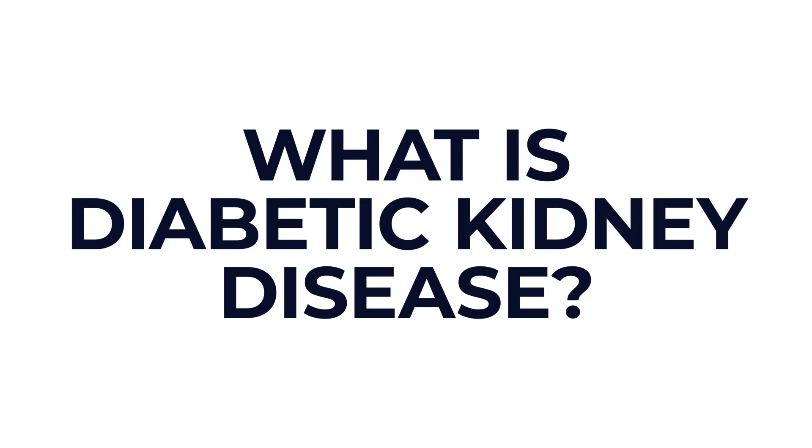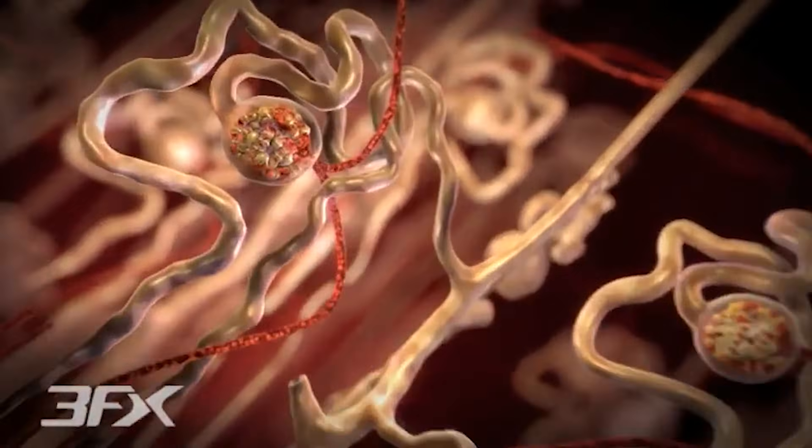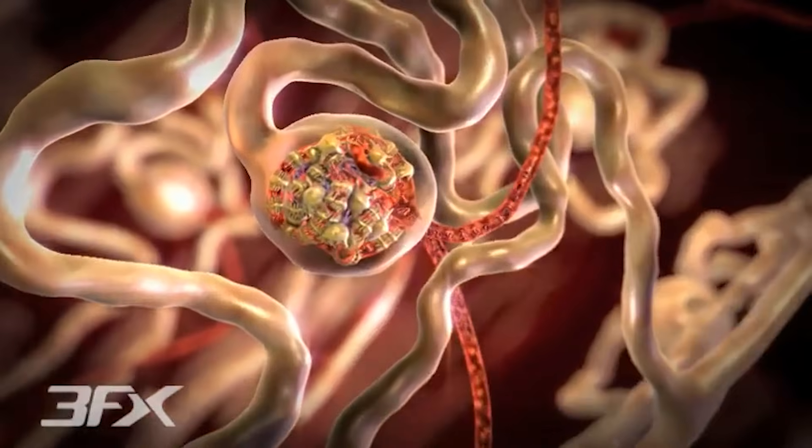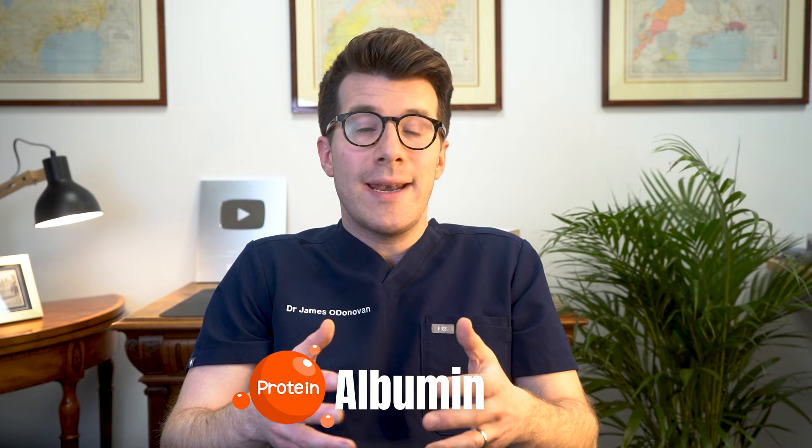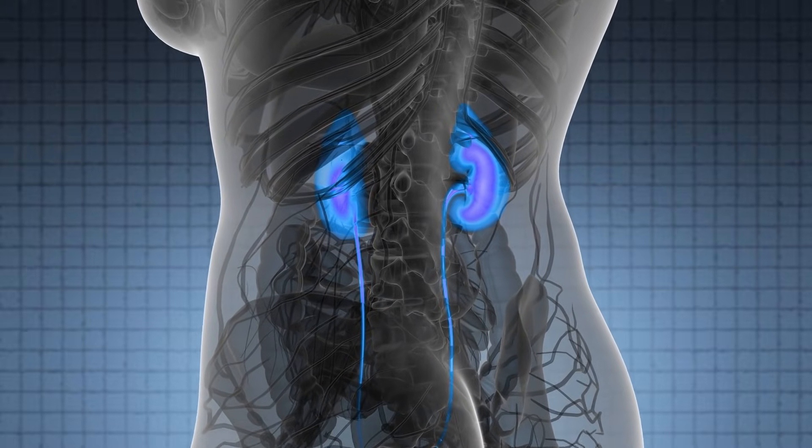So what exactly is diabetic kidney disease? Diabetic kidney disease starts when high blood sugar damages the kidney filters, also known as the glomeruli — you can see some pictures of these on screen now. They start to leak, letting a protein called albumin get into your urine in larger amounts. At first this leakage might be mild, but over time it can grow worse and your kidney function can drop.